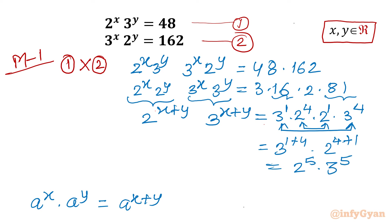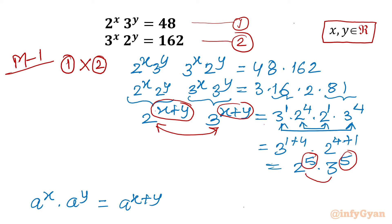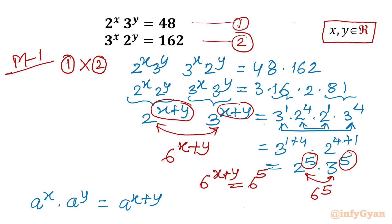Now on the LHS, once the exponents are the same, we can take the product of the bases, giving 6^(x+y). Applying the same on the RHS, 2^5 times 3^5 becomes 6^5. So we have 6^(x+y) equal to 6^5. Since the bases are the same, the powers must be equal, giving us x plus y equal to 5.